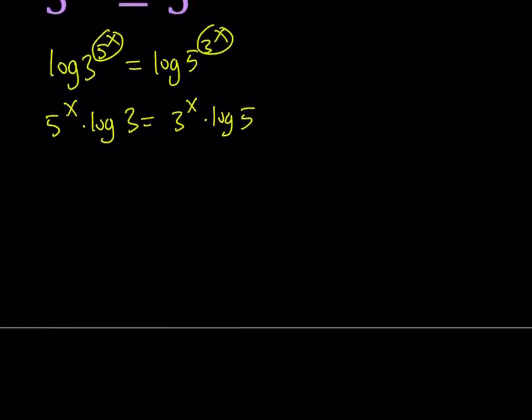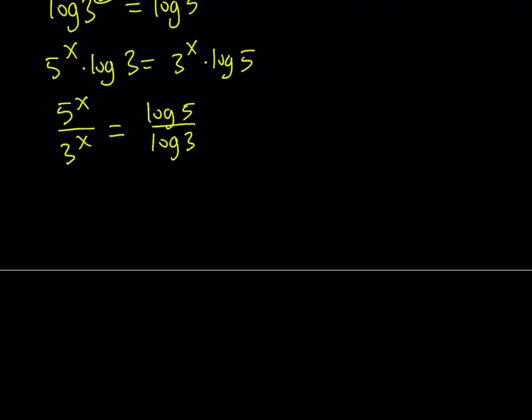Now, we can go ahead and put the two expressions that have the x as an exponent together. So, divide both sides by 3 to the power x and then divide by log 3. Now, since they both have the same exponent, we can write it as 5 over 3 to the power x.